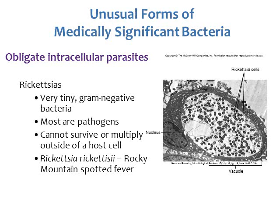Rickettsia are obligate intracellular, so they cannot survive or multiply outside of a host cell. One specific species, Rickettsia rickettsii, causes Rocky Mountain spotted fever. In the picture to the right, tiny rickettsial cells are visible living in a vacuole — a structure inside a eukaryotic cell. You can tell they're inside a eukaryotic cell because it has a nucleus, labeled on the left-hand side of the image.